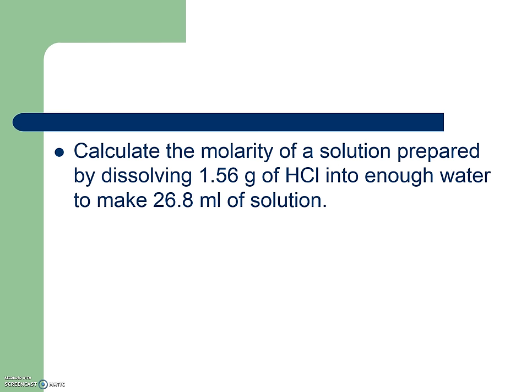Let's try another one. Calculate the molarity of a solution prepared by dissolving 1.56 grams of hydrochloric acid into enough water to make 26.8 milliliters of solution. So 1.56 grams of HCl. I'm going to convert it to moles. And so I'm going to put grams of HCl on the bottom. HCl weighs 36.51. One mole of HCl on top. I go ahead and I solve the problem. And I get 0.0427 moles of HCl.